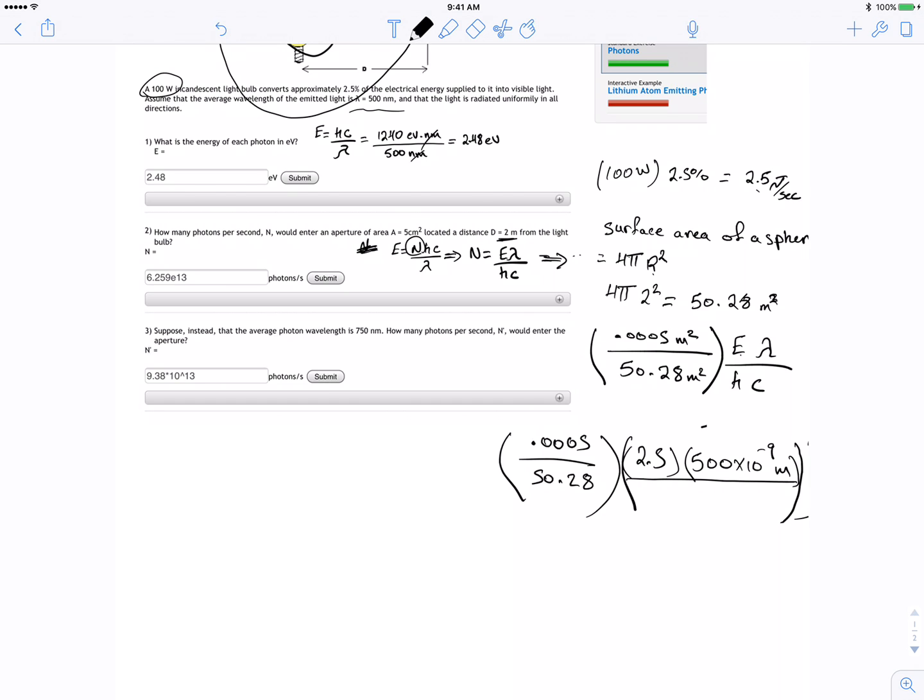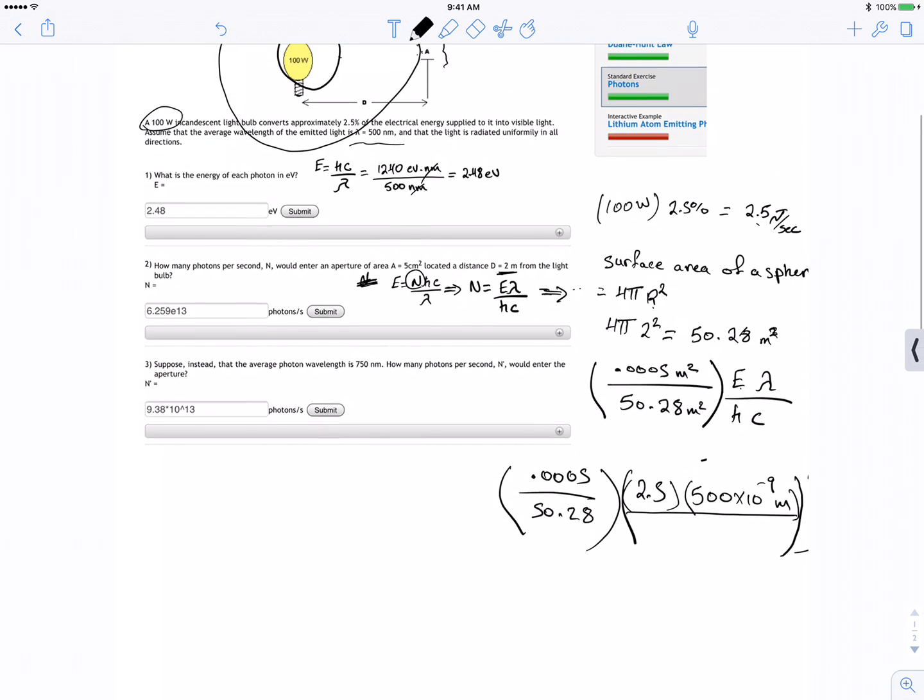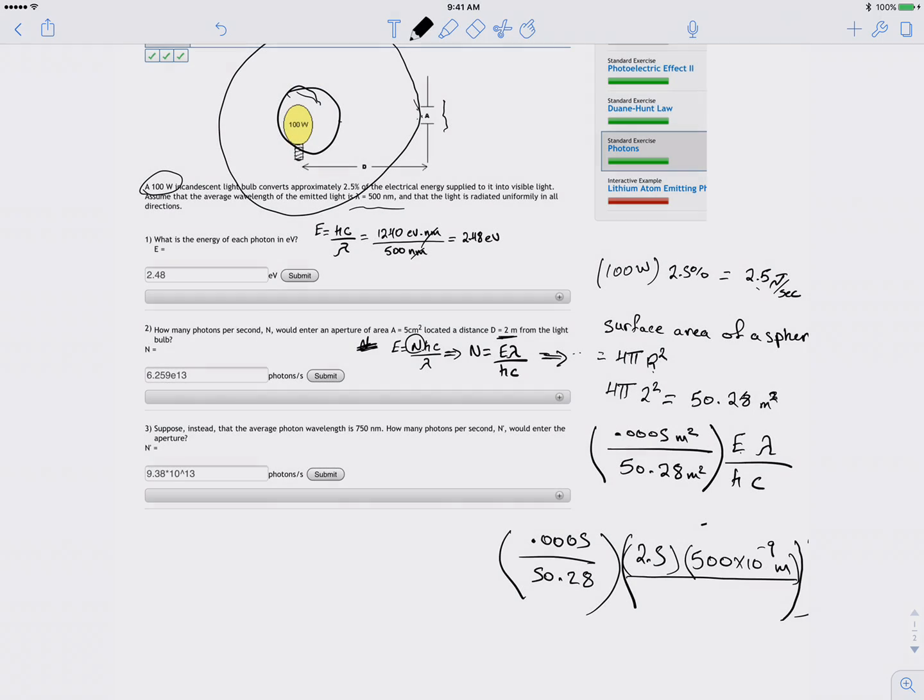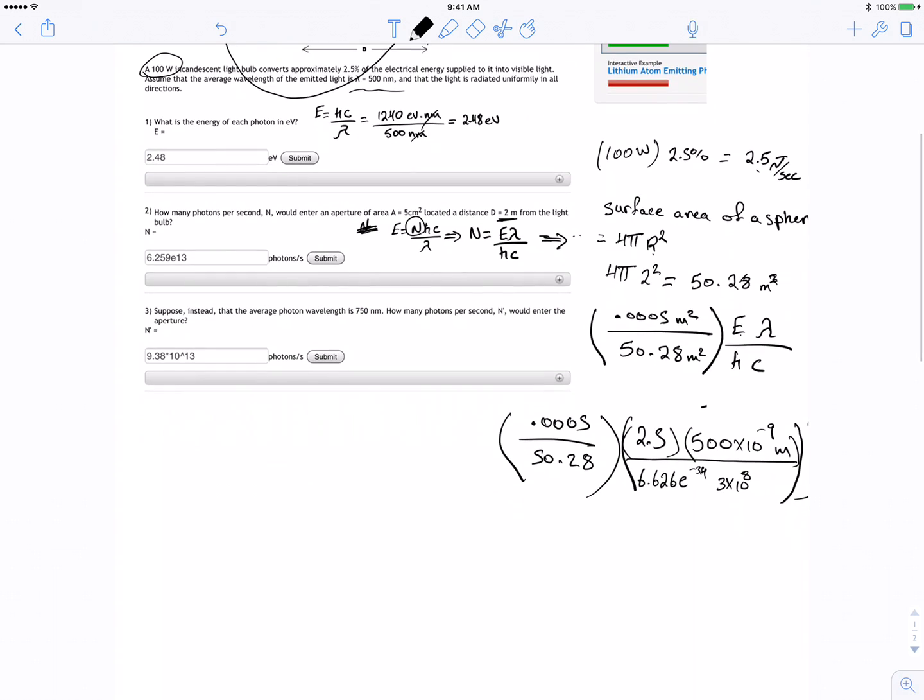And then hc will be using the joule one, so we'll use 6.626 times 10 to the negative 34 times c. C is 3 times 10 to the power of 8. So after we get the math, mine I got a number of 6.2554 times 10 to the 13 photons per second.